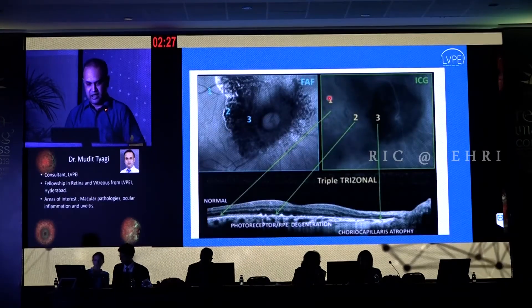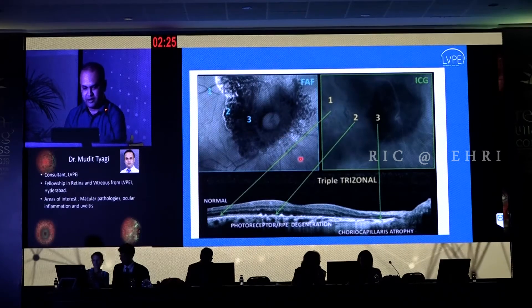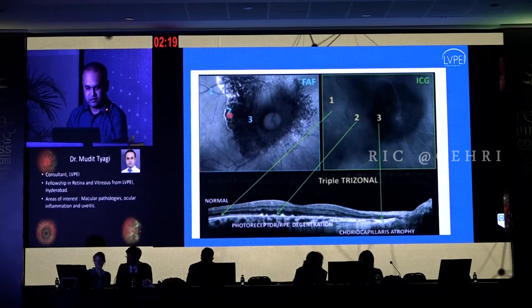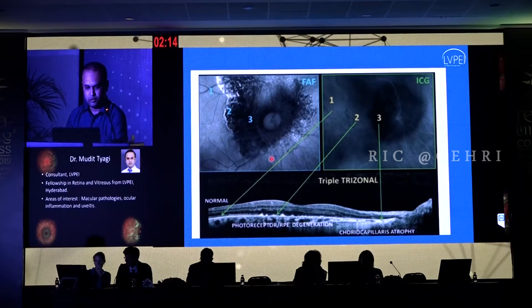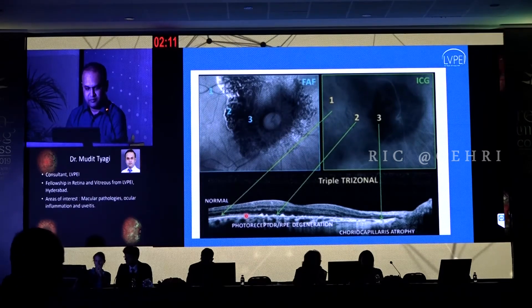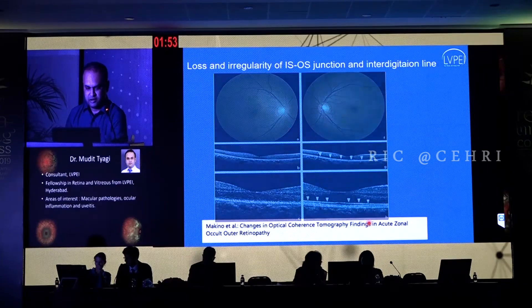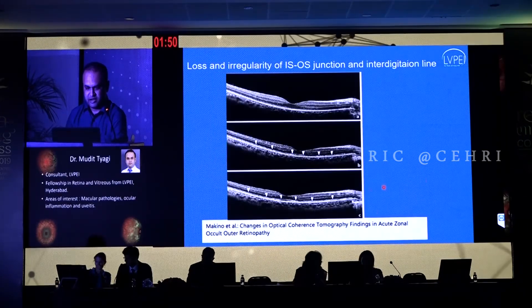Dr. Jampol's group described this characteristic tri-zonal pattern seen on OCT: zone one is a normal area of the retina; zone two shows photoreceptor damage; and zone three is predominantly choriocapillaris atrophy. You can correlate this with OCT, where zone two shows photoreceptor and RPE degeneration, and zone three has choriocapillaris atrophy. Multiple papers and reports have also shown changes in the photoreceptor area and in the IS/OS junction.